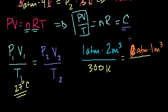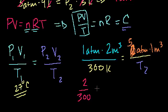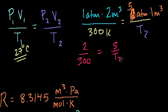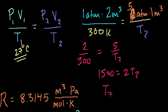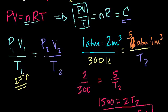Let's make the pressure 5 atmospheres. Now we want to know what the second temperature is. We've set up our equation, so we have 2 over 300 atmosphere·meters³ per Kelvin equals 5 times 1 over T2. So 1,500 equals 2T2. Dividing both sides by 2, T2 equals 750 Kelvin.